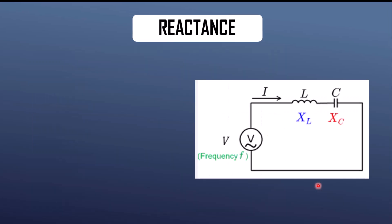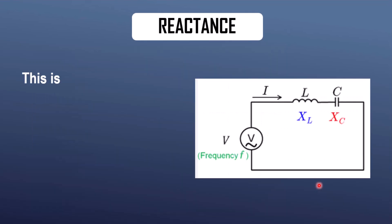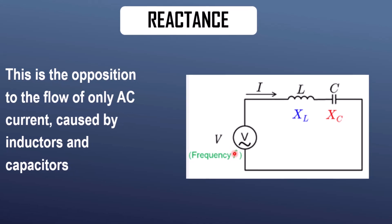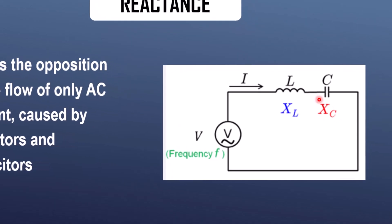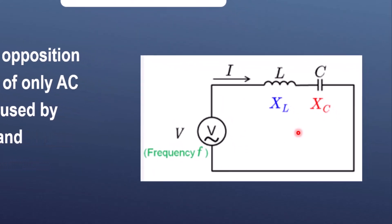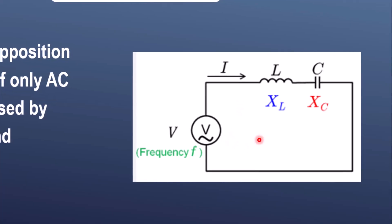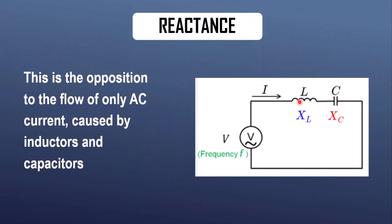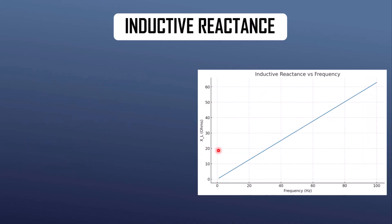So let's see what is reactance. Reactance is the opposition to the flow of only AC current, caused by inductors and capacitors. Here you can see a complete electrical circuit in which there is an inductor and a capacitor connected in series with the AC power source. The opposition offered by these two components to the flow of electric current is called the reactance. There are two types of reactances.